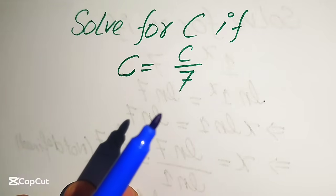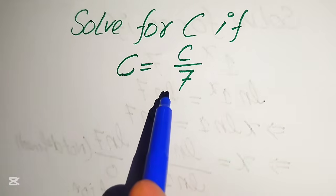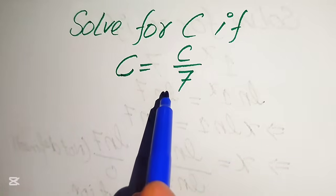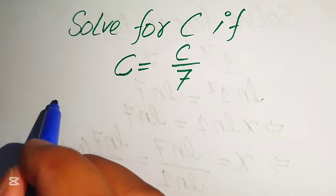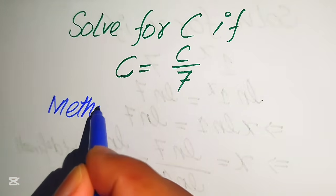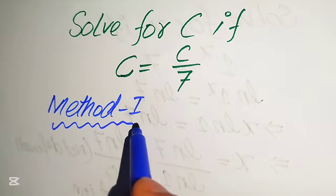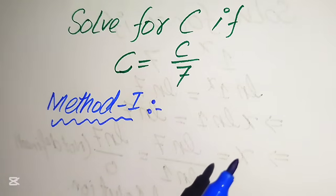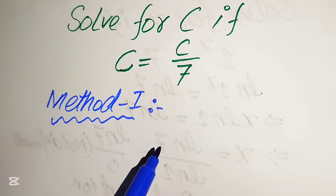Hello everyone. Today I want to show you how to solve this problem: find all the values of c if c equals c over seven. We will solve this problem using two methods, and I hope you like both of them. If you have any other method in mind, please don't hesitate to write it in the comment section.